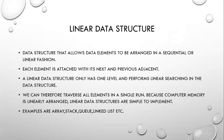Linear Data Structure is a data structure that allows data elements to be arranged in sequential or linear fashion. Each element is attached with the next and previous element. Linear Data Structure only has one level and performs linear searching. All elements are stored in a sequential order, meaning they are stored in one level, so it is easy to perform linear searching. Therefore we can traverse — meaning visit — all the elements in a single run. Computer memory is also arranged in linear fashion, making Linear Data Structures easy to implement.